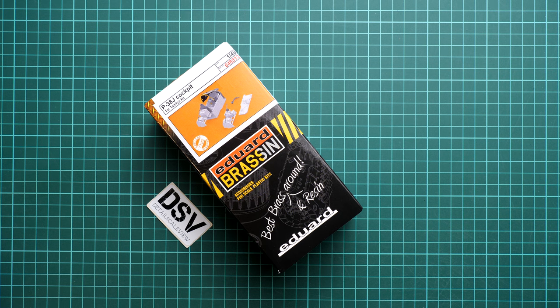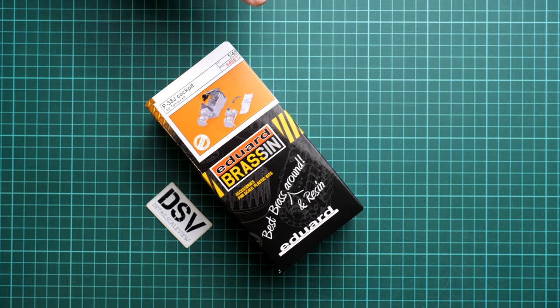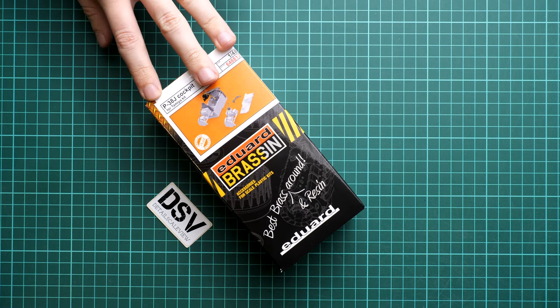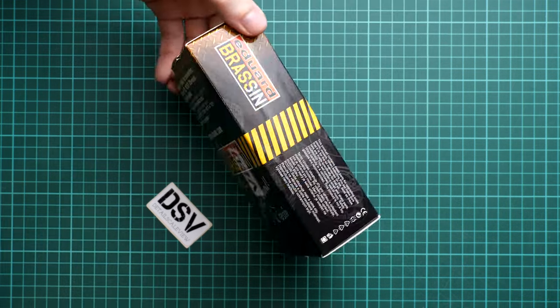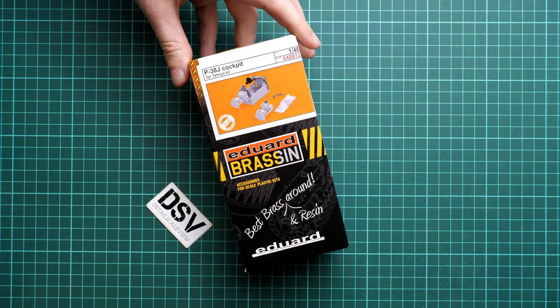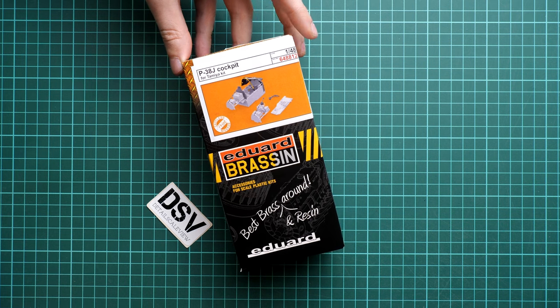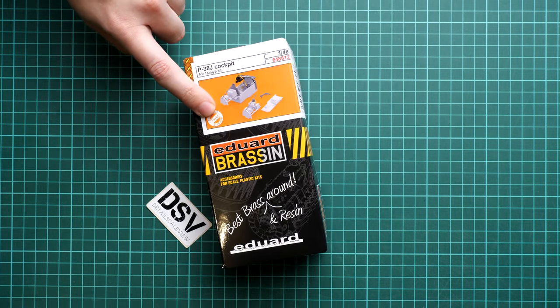In 1/48 scale this should be a noticeable upgrade. Here on the table we have the commercial sample. The kit number is 648812. The packaging is quite standard for this brassin series from Eduard, with a 3D image of the accessory. There's a small sign written 'print,' which means it was made with 3D printing technology.